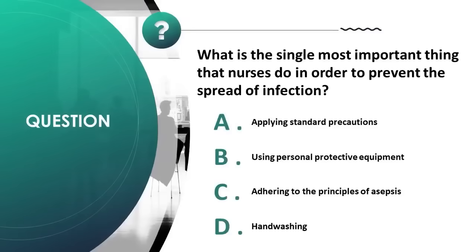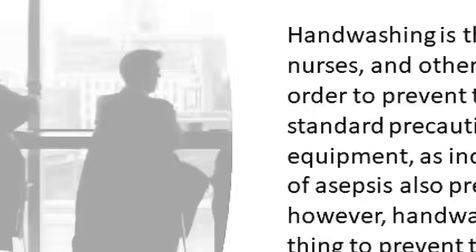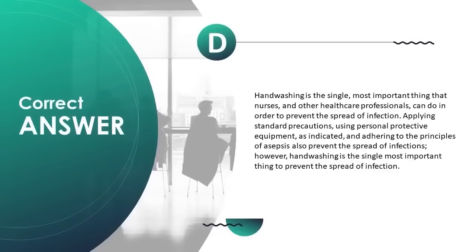What is the single most important thing nurses do to prevent the spread of infection? A) applying standard precautions, B) using personal protective equipment, C) adhering to principles of asepsis, D) hand washing. Correct answer is D. Hand washing is the single most important thing that nurses and other healthcare professionals can do to prevent the spread of infection. Although standard precautions, PPE, and asepsis also prevent the spread of infections, hand washing is the most important.